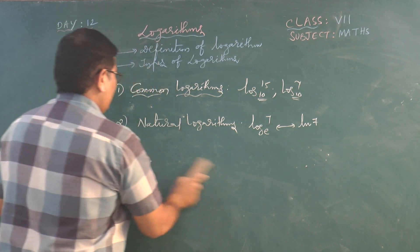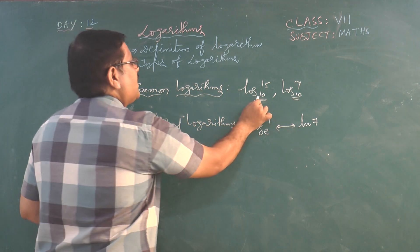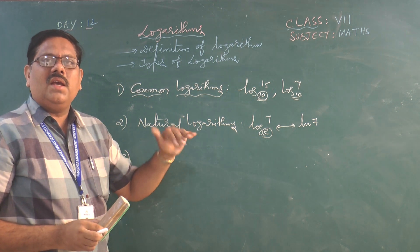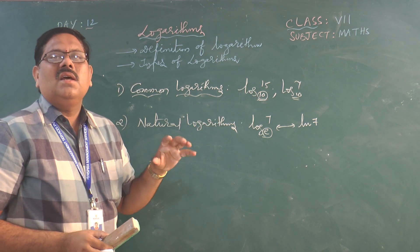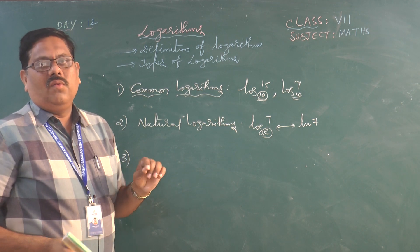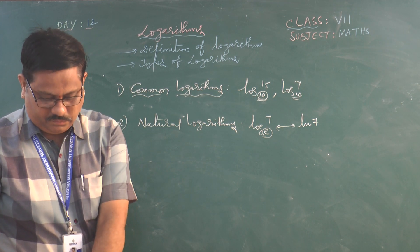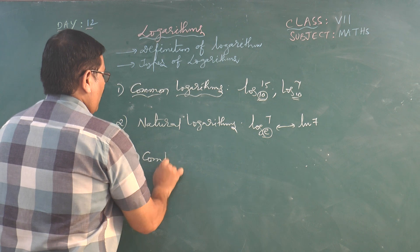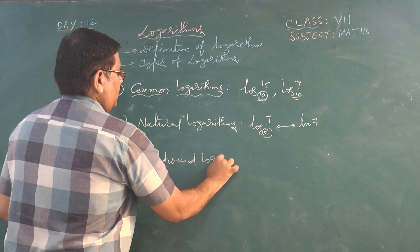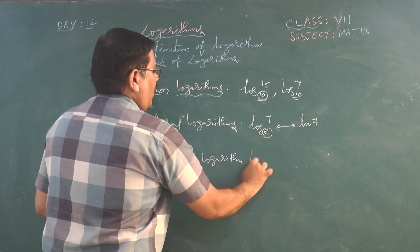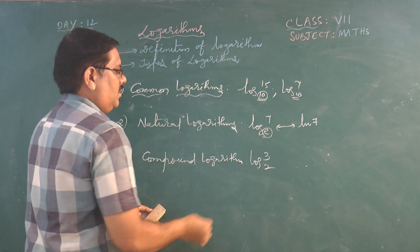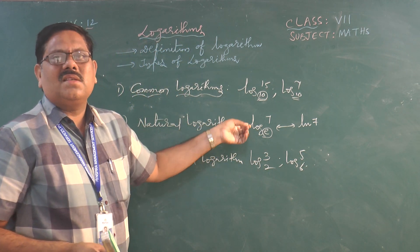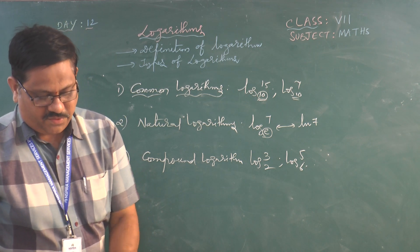If the base is 10, we call it a common logarithm; if the base is e, we call it a natural logarithm. If the base is any number other than e and 10, it is called a compound logarithm. For example, log_2(3) or log_6(5) are compound logarithms.